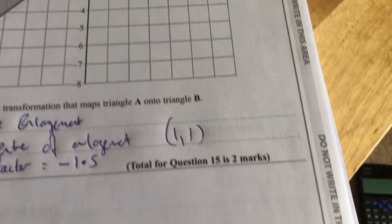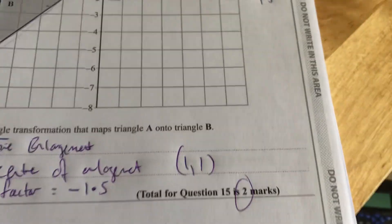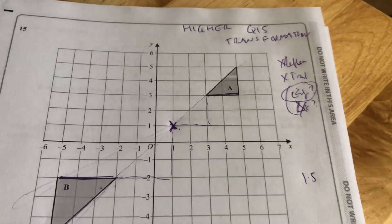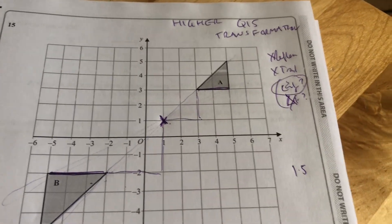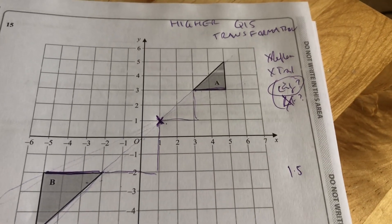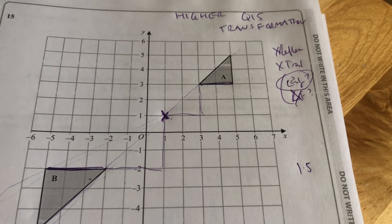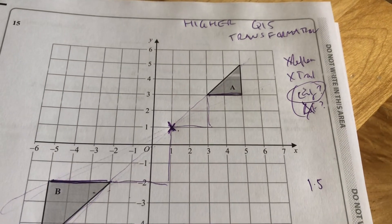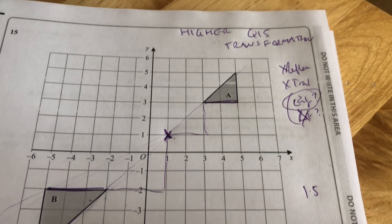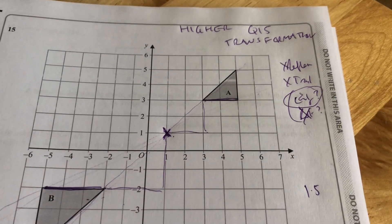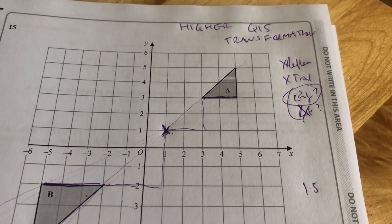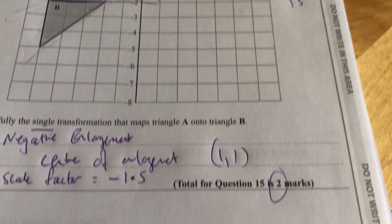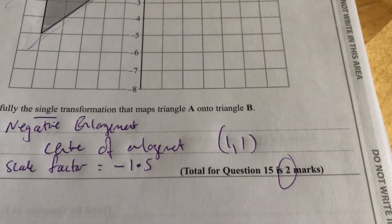That's a two-mark question — I've actually gone over the time there, but hopefully we can have saved time on those earlier questions. That's why I keep saying: early in the paper, try and save time so you can spend more time on these more challenging questions later in the paper. That's a higher GCSE transformation question — negative enlargement. Thanks for watching. Don't forget to like, subscribe and share, and good luck for your exams.